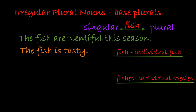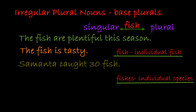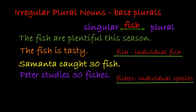Let's say your Aunt Samantha is a prodigious fisherman and she goes fly fishing one weekend and comes back with 30 fish — you'd say 'Samantha caught 30 fish.' On the other hand, your Uncle Peter is a prodigious marine biologist who studies 30 different types of fish — you would say 'Peter studies 30 fishes.' That doesn't mean he studies 30 individual fish; it means he studies 30 types of fish. Fishes refers to species; fish refers to individuals.